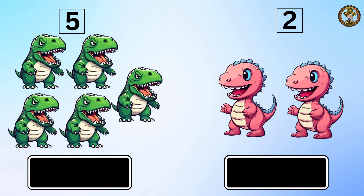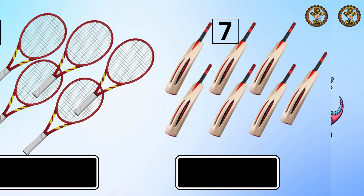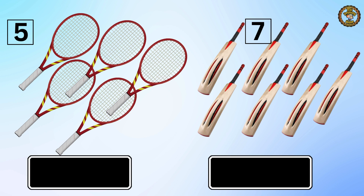Then we have five dinosaurs on the left and two dinosaurs on the right. Which one is more? That's correct — five dinosaurs are more than two dinosaurs.